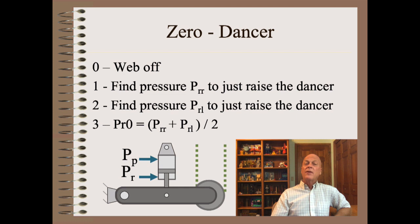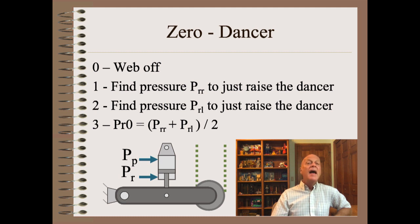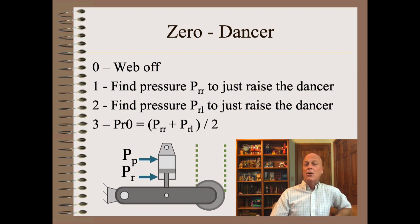I say 'for this system' because zero for other systems will likely be different. Friction resists motion everywhere. However, the motion as the system bounces up and down about a neutral point — such as this dancer — averages out to zero, which is why we use the average of the just-raise and the just-lower values.